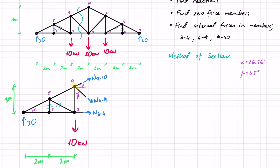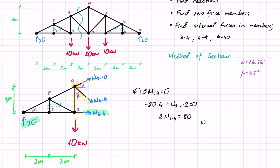Starting with moments around joint 9 — N9-10 and N4-9 pass through that joint so they don't contribute, nor does the 10 kN force there. Only N3-4 and the 20 kN reaction contribute. Sum of moments around joint 9 equals zero: the reaction of 20 creates a negative moment times distance 4, and N3-4 creates a positive moment times distance 2. So 2·N3-4 equals 80, giving N3-4 equals 40 kilonewtons.